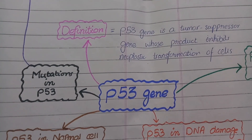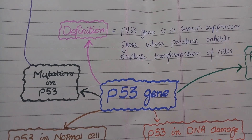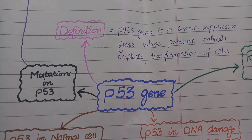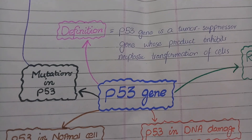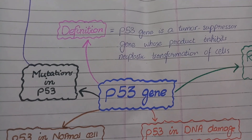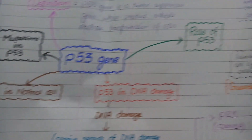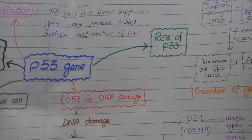p53 is a tumor suppressor gene whose product is a protein that inhibits the neoplastic transformation of a cell. Now let's discuss the role of p53.